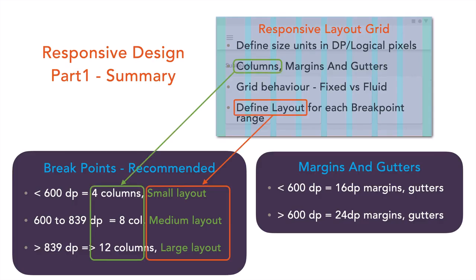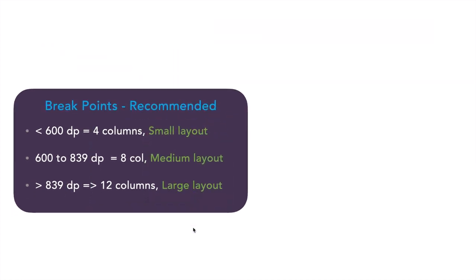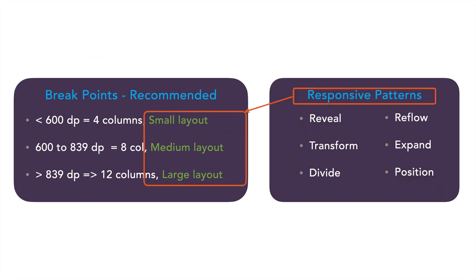In the previous session we looked at building a responsive layout using the concept of responsive layout grid, under which we imagined our app screen as a responsive layout grid. We defined three layouts: a four column layout, an eight column layout, and a 12 column layout, calling them small, medium, and large layouts. Now let's look into responsive patterns, which are quite useful to arrange UI components based on screen size and device type.